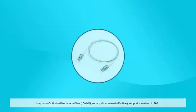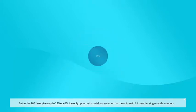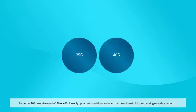Using laser-optimized multimode fiber (LOMMF), serial optics can cost-effectively support speeds up to 10G. But as the 10G links give way to 25 or 40G, the only option with serial transmission had been to switch to costlier single-mode solutions.